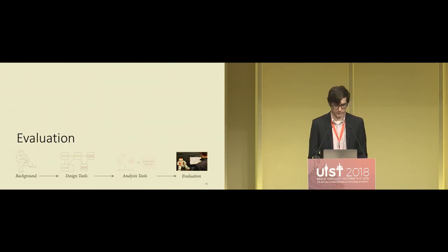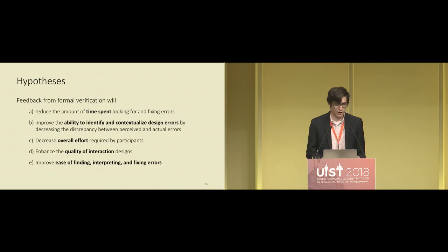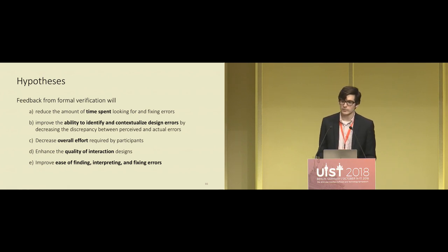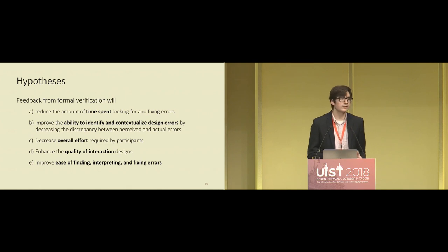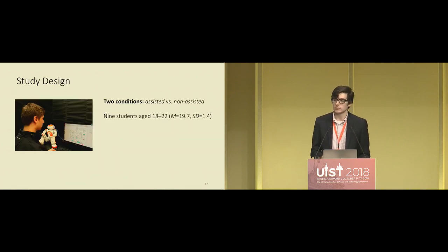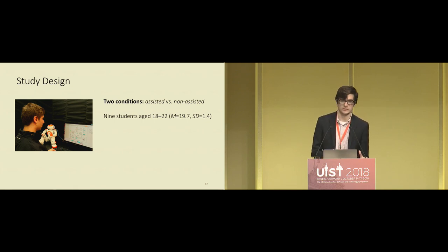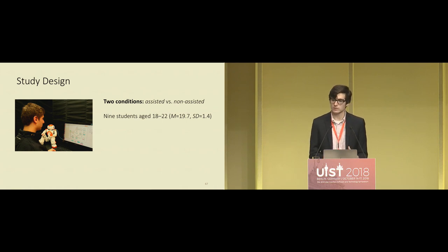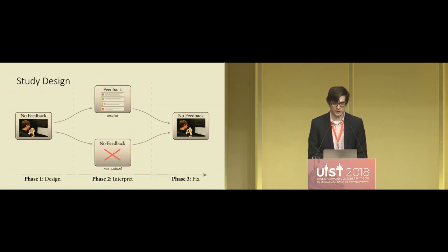Moving to the evaluation of Rover, we sought to figure out the benefits of feedback and verification on interaction design. Our hypotheses were that feedback from formal verification would improve: time spent finding and fixing errors, ability to identify and contextualize design errors, overall effort required by designers, quality of interaction designs, and ease of finding, interpreting, and fixing errors. We had two conditions: an assisted condition where participants received formal verification feedback, and a non-assisted condition where they did not. Nine participants aged 18 to 22 took part, each with at least one semester of programming experience.